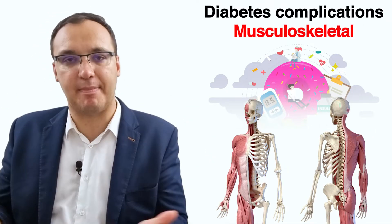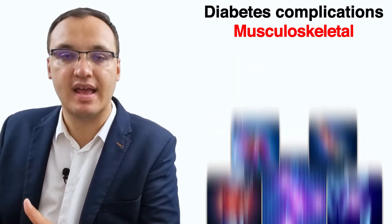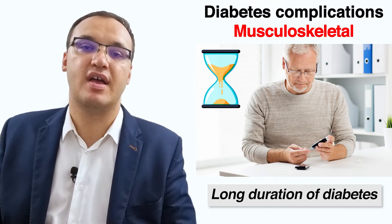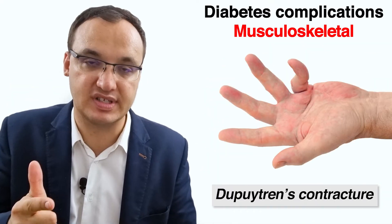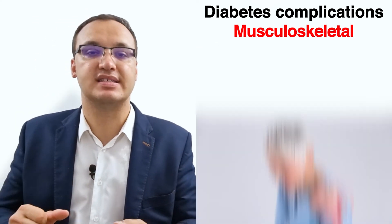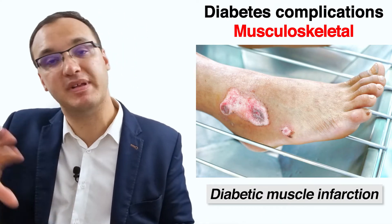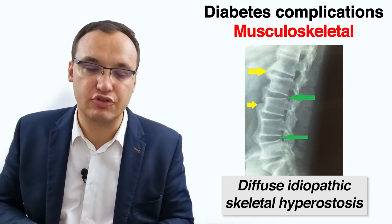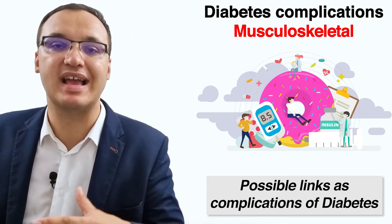To recap: some musculoskeletal complications of diabetes are common and can lead to significant pain and disability. They usually occur in patients with poorly controlled diabetes of very long duration and in those with other severe complications. The most common hand abnormalities are carpal tunnel syndrome, Dupuytren's contracture, trigger finger, and limited joint mobility. Some complications cause shoulder pain — frozen shoulder and rotator cuff tendinopathy. Neuropathic arthropathy and diabetic muscle infarction are rare, while DISH and osteoarthritis have possible links to diabetes.